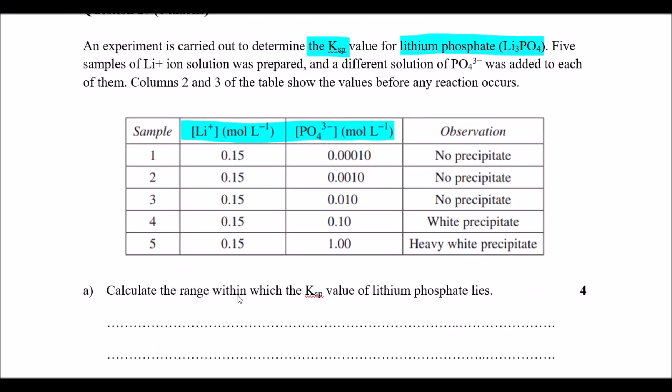Question A says calculate the range within which the Ksp value of lithium phosphate lies. Remember Ksp is where the equilibrium occurs where we get a precipitation. We need to consider sample number 4 because that's where we see the white precipitate occurring. We've already reached the precipitation, we have already achieved the equilibrium so to speak.